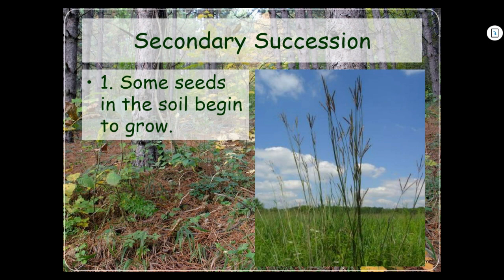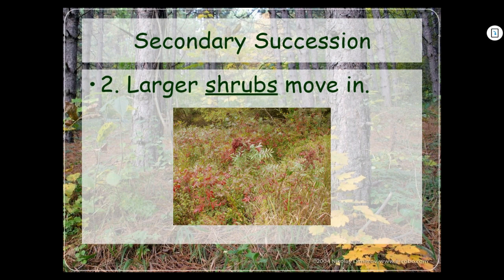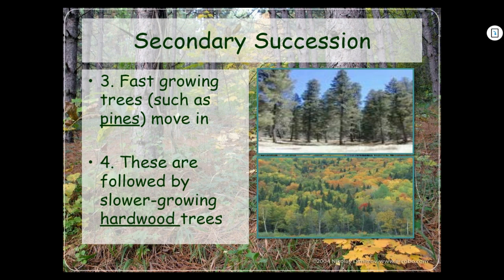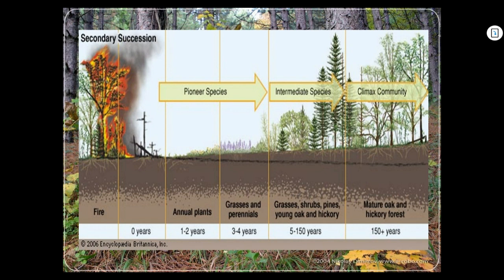In secondary succession, seeds in the soil begin to grow. Then larger shrubs move in — shrubs are like bushes. Then fast-growing trees such as pines come in, since pines grow faster than hardwood trees. Finally, these are followed by slower-growing hardwood trees. After a fire, at zero years you have everything dead. After one to two years, you start getting annual plants. The key thing to notice is that the more time goes by, the larger the plants get — three to four years gives you grasses and perennials; after five to 150 years, grasses, shrubs, pines, and young trees. After 150-plus years, you get the climax community.